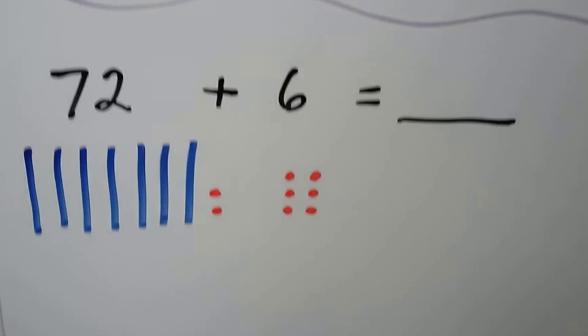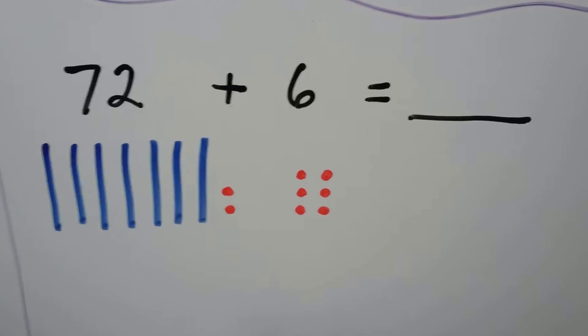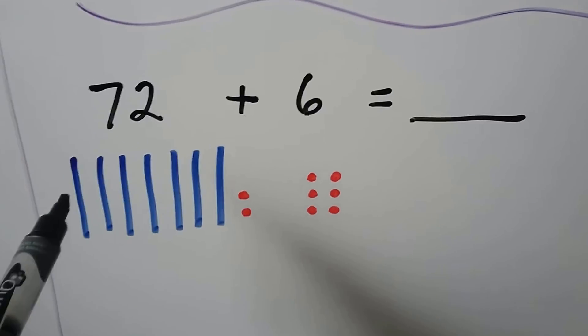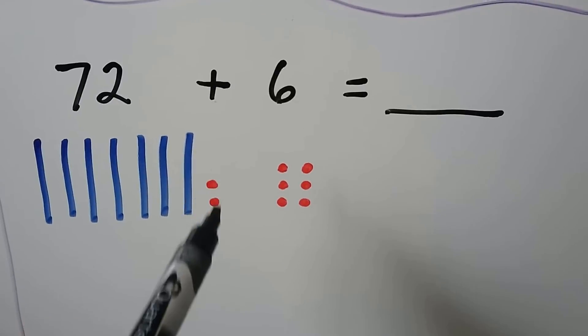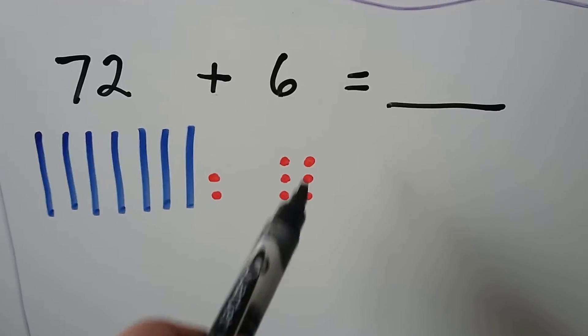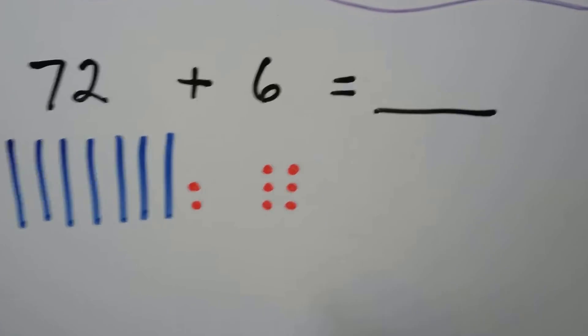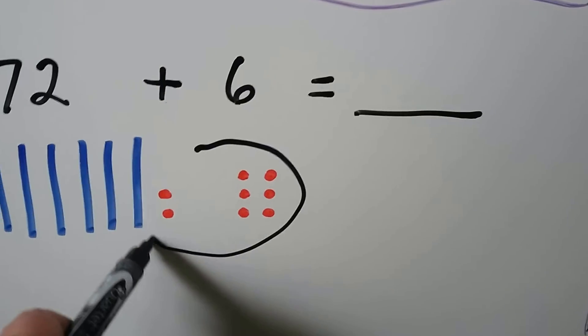Let's try it one more time. We have 72 plus 6. We have 7 blue bars to make 7 tens, and we have two red dots for the two 1s, and we're adding 6, so we have 6 dots.